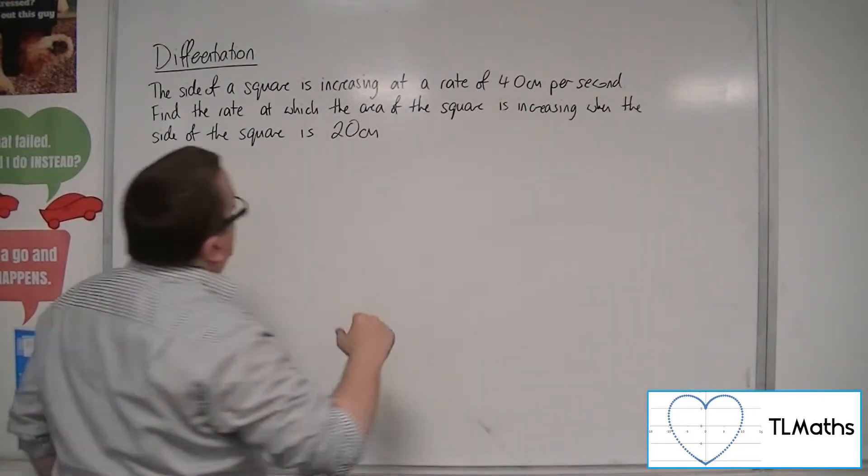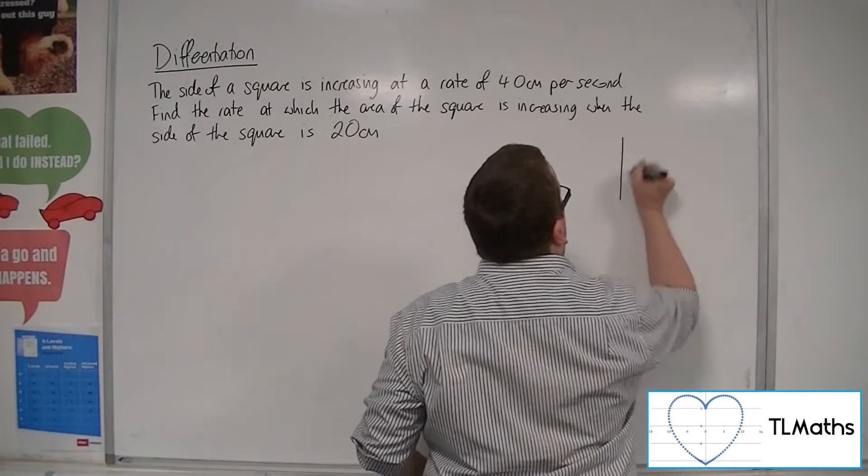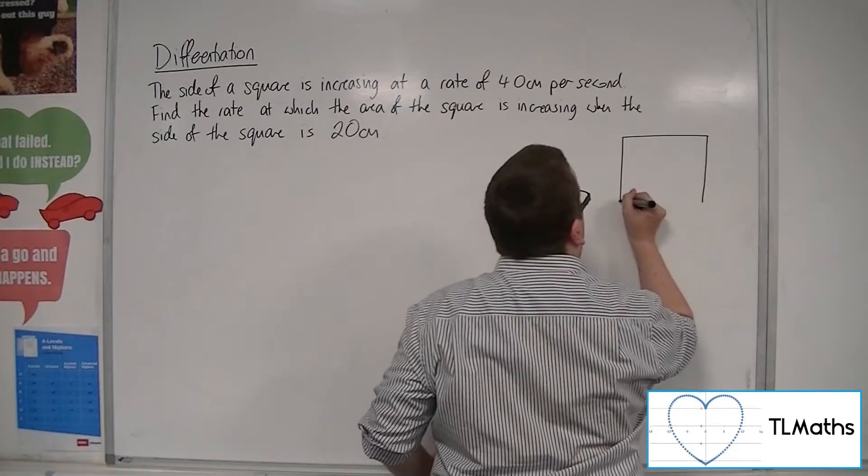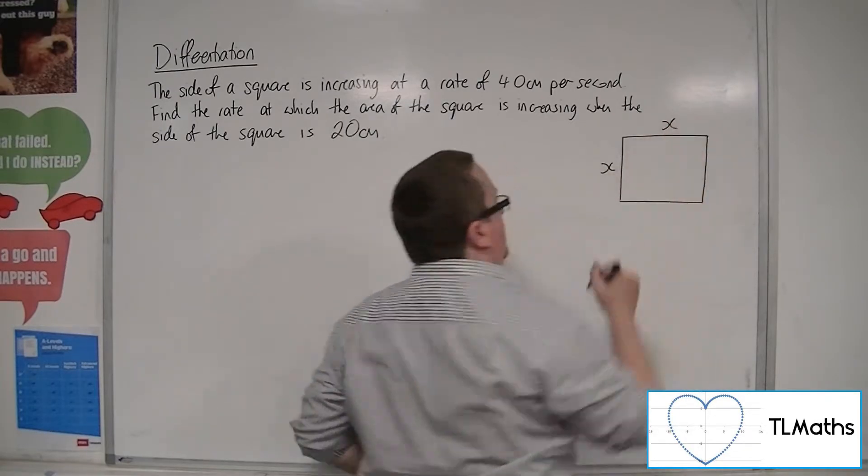Now in order to think of this side of the square, if I draw a square, here is the square, and it has, let's say, side length of x.